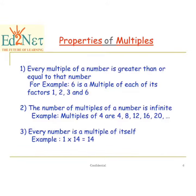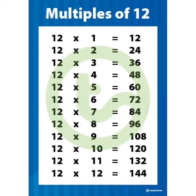In our last video we learnt about the properties of factors. Today we will learn properties of multiples. The first property: every multiple of a number is greater than or equal to that number. Here you can see that in the 12 times table, all the multiples are equal to 12 or greater than 12. There can be no number less than 12 that is a multiple of 12.